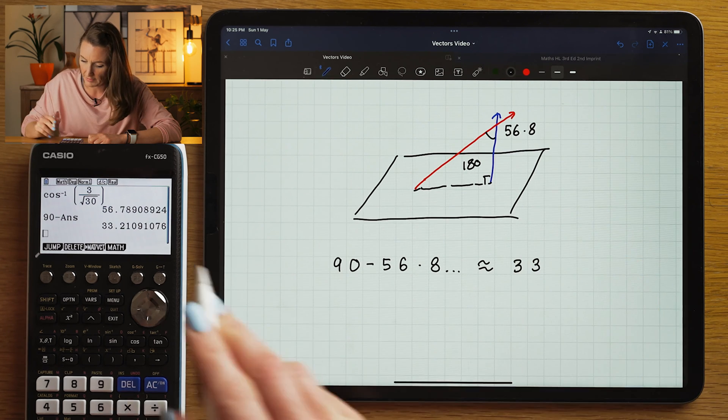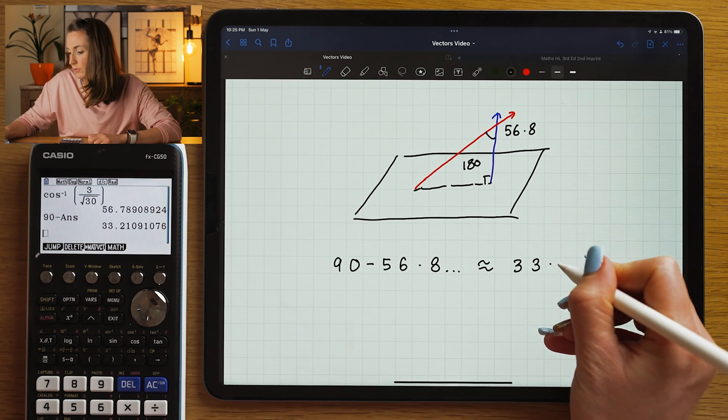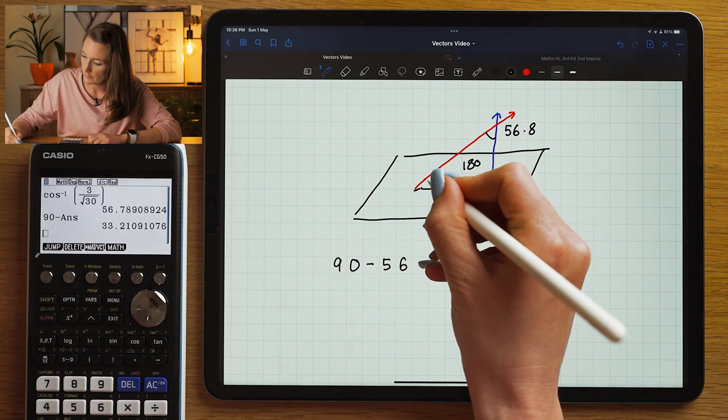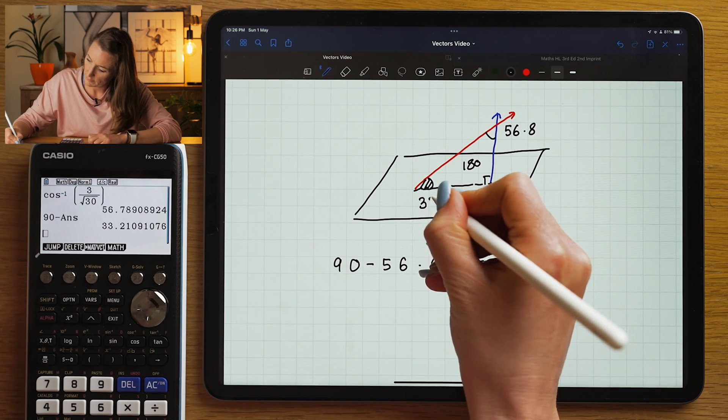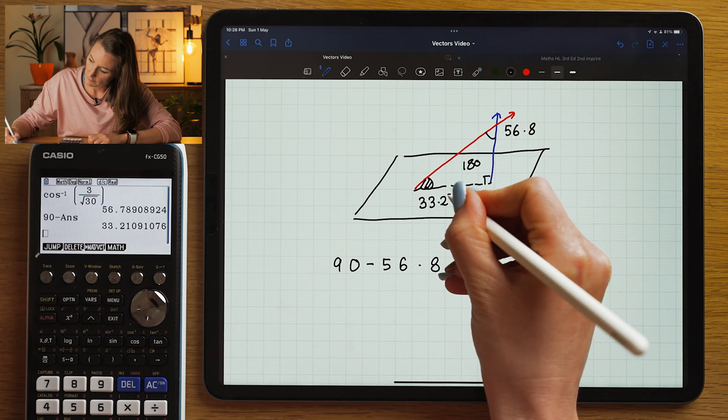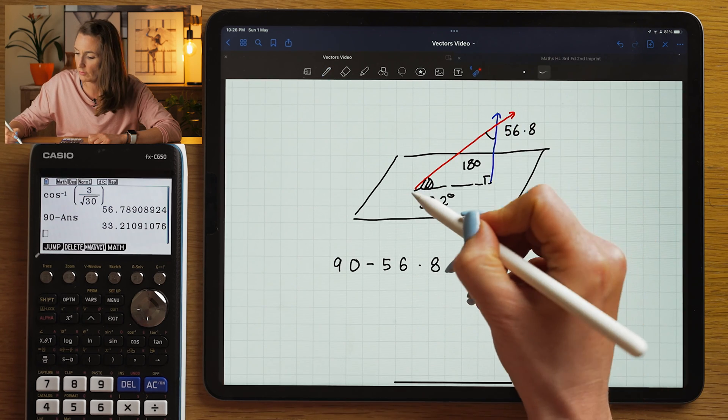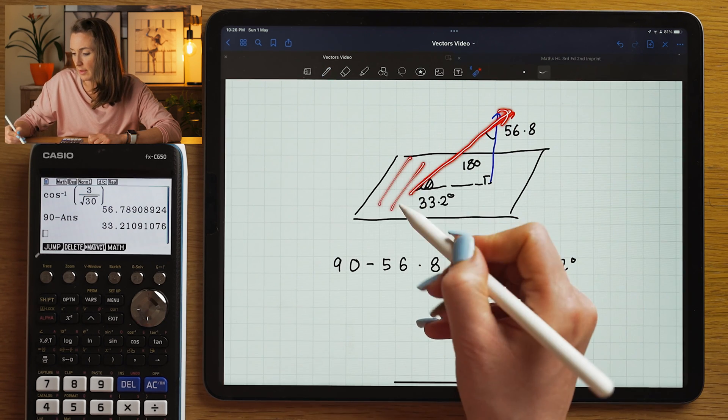If I round to 3 significant figures, 33.2 degrees. And that's the angle between the line and the plane.